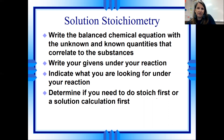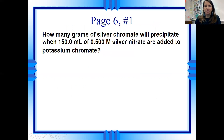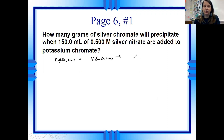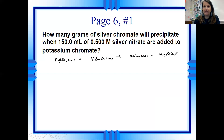Let's take a look at this problem. It says how many grams of silver chromate will precipitate when 150 milliliters of 0.5 molar silver nitrate are added to potassium chromate. We start with our balanced reaction: silver nitrate aqueous reacting with potassium chromate aqueous. We do a double replacement product prediction, so we're going to have KNO₃ aqueous and silver chromate solid. We balance it with a 2 in front of silver nitrate and a 2 in front of KNO₃.